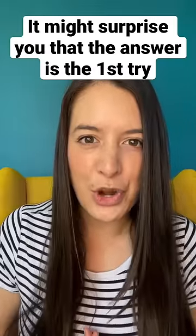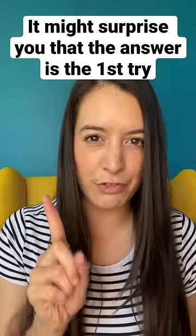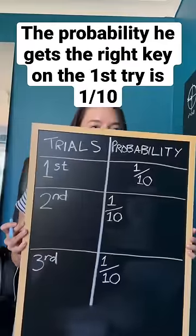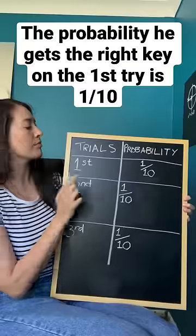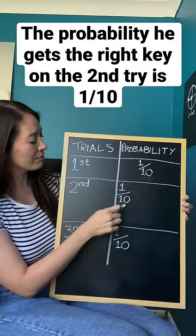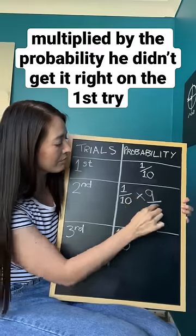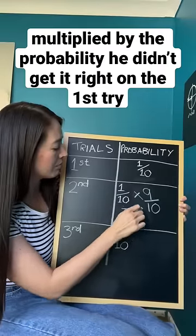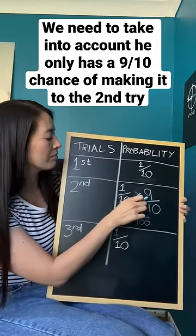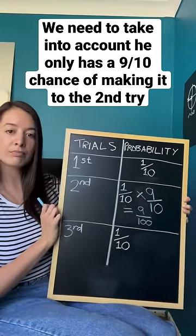It might surprise you to know that the answer is the first try. The probability he gets the right key on the first try is one in 10. The probability he gets the right key on the second try is one in 10, multiplied by the probability that he didn't get the right key on the first try. We need to take into account that he only has a nine in 10 chance of even making it to the second try.